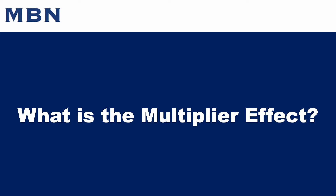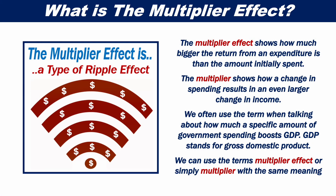What is the multiplier effect? The multiplier effect shows how much bigger the return from an expenditure is than the amount initially spent. The multiplier shows how a change in spending results in an even larger change in income. We often use the term when talking about how much a specific amount of government spending boosts GDP — Gross Domestic Product. We can use the terms multiplier effect or simply multiplier with the same meaning.